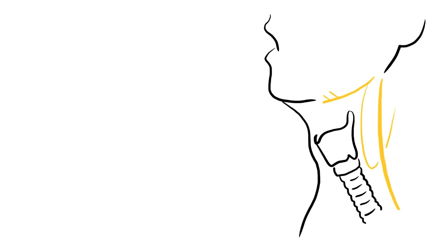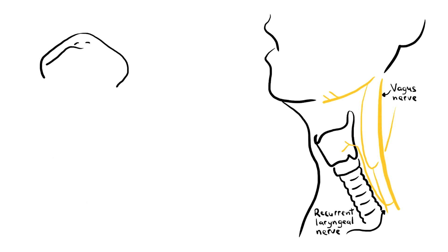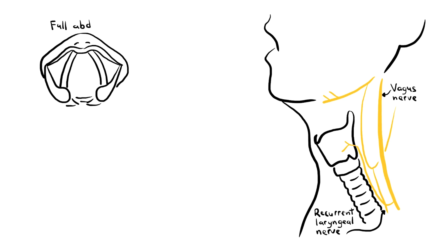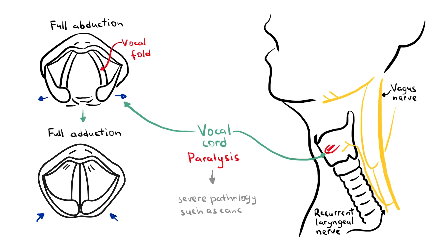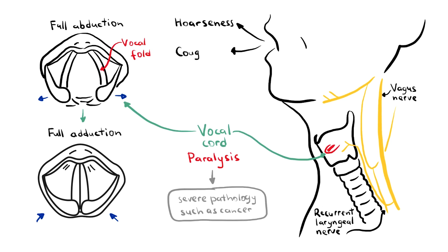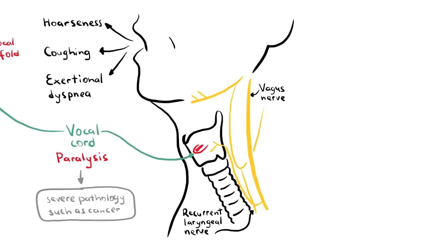Laryngeal nerve palsy usually refers to the palsy of the recurrent laryngeal nerve. The recurrent laryngeal nerve is responsible for both abduction and adduction. Therefore, recurrent laryngeal nerve palsy is also called vocal cord paralysis and may be the first presentation of severe pathologies such as cancer. People often present with hoarseness, coughing, and exertional dyspnea. In this video we will focus on the laryngeal nerves, as understanding their anatomy is important in understanding the pathologies that may arise.